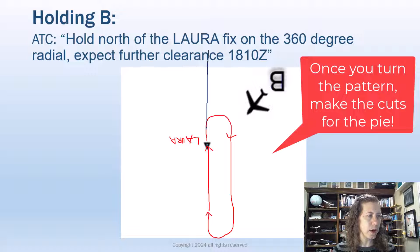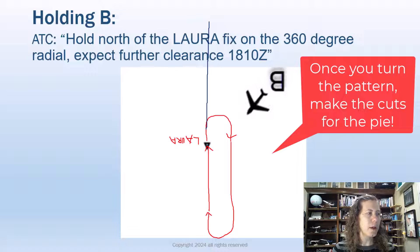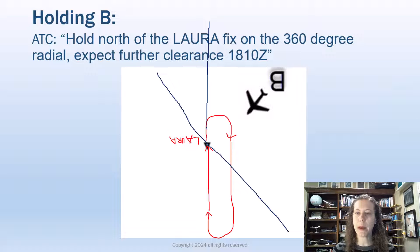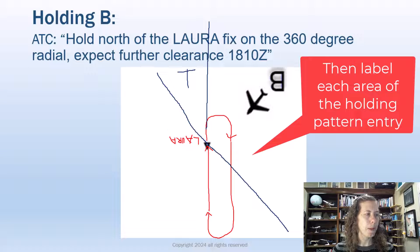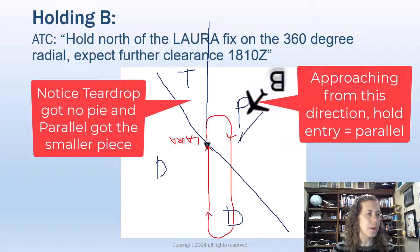So I'm turning my pie around so that my airplane is going up toward that fix, toward the fix. All right, so let's draw the line coming out here. So we draw the line and then we are going to draw another line to cut up the holding pattern just like before. And we have a teardrop area. We have the parallel area, and we have the direct area here. So we can see if we're approaching from where the airplane is, we would be flying a parallel entry in this example.